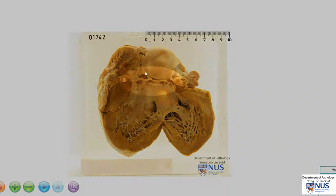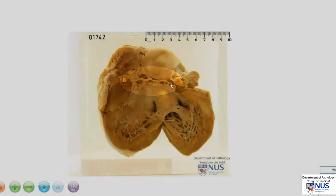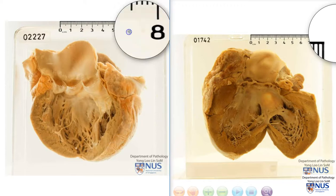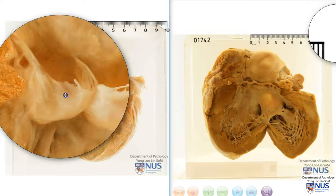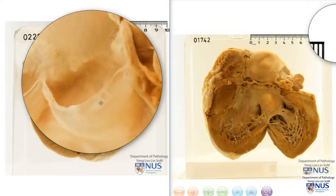The main pathology is seen in the aortic valve, and to better appreciate this, let's compare this with that of a normal heart. On this left side we have a relatively normal heart, again with the aorta and the aortic valve, and on the right is the specimen that we are looking at now. If you look at the aortic valve in the relatively normal heart, we can see that the cusps are actually quite delicate.